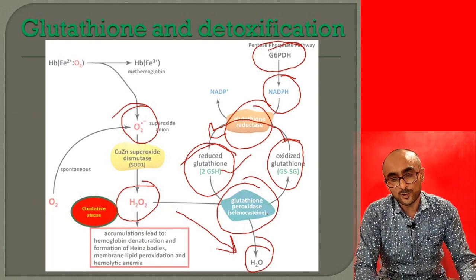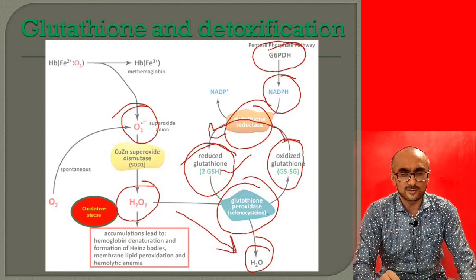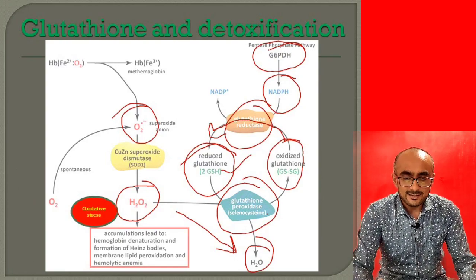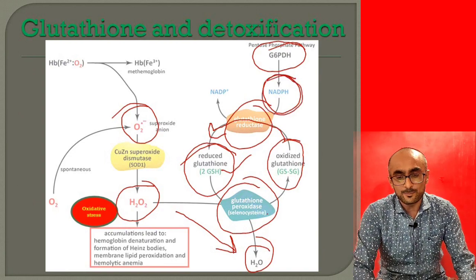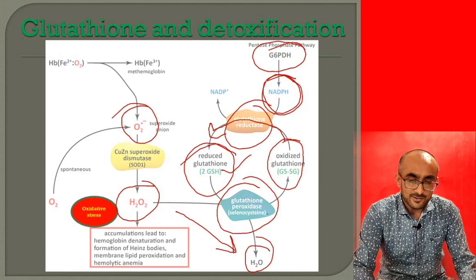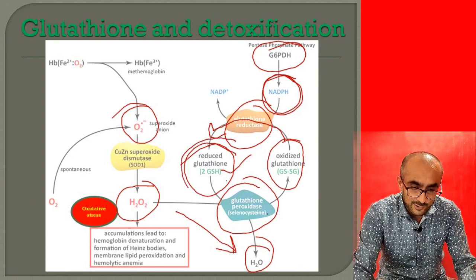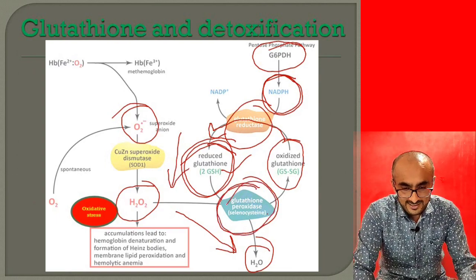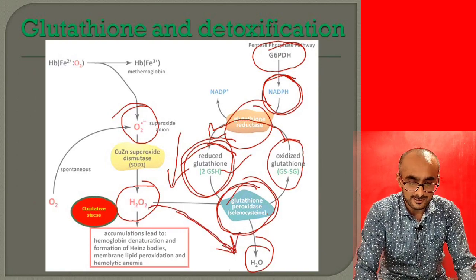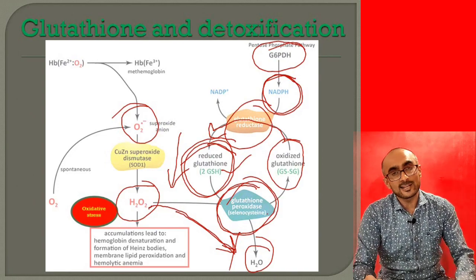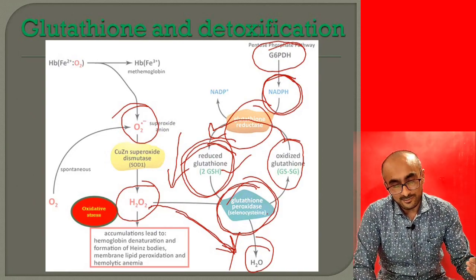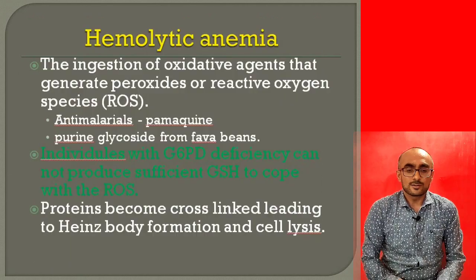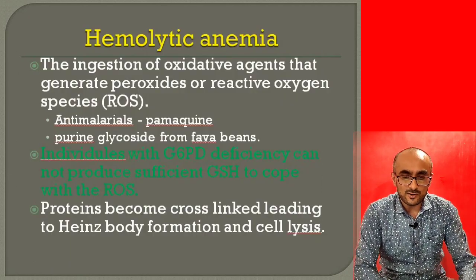If there is any problem with glucose-6-phosphate dehydrogenase — for example, if its activity is absent or its gene is mutated — sufficient NADPH will not be produced in the cell. As a result, sufficient reduced glutathione (GSH) will not be available. Consequently, glutathione peroxidase will not be able to convert H2O2 into water, causing H2O2 to accumulate in the cell and cause oxidative stress, which is responsible for hemolytic anemia.